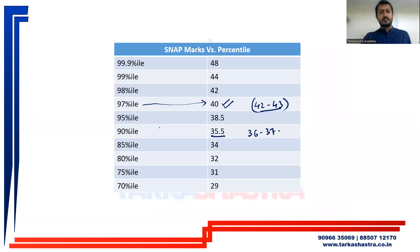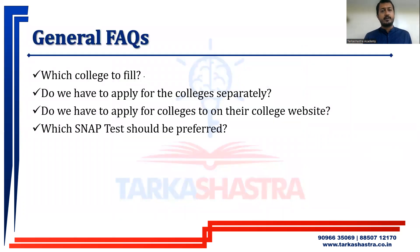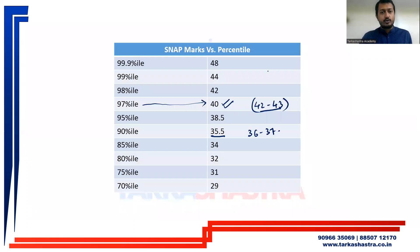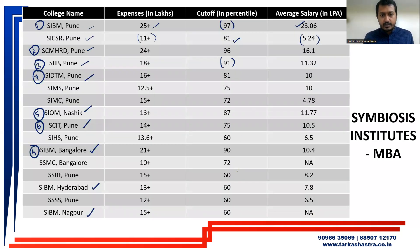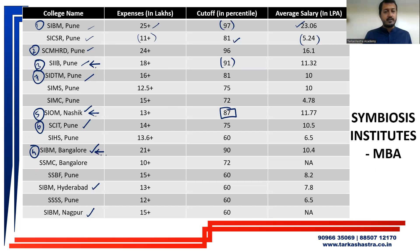Now I will explain how to select your college. Write a mock test and check your score against the marks versus percentile chart. For example, if you are scoring 35 marks, that is approximately 90th percentile. Check for colleges having 90th percentile as the cutoff — SIBM Nashik is in your range, SIIB is in your range, and SIBM Bengaluru is in your range. So 3 to 4 colleges can be shortlisted based on that.